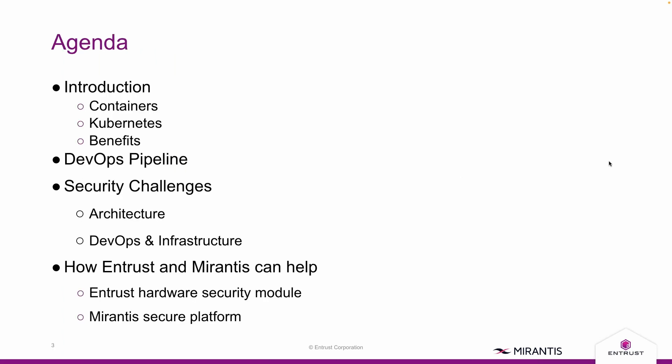For today's session, we'll start with a brief introduction to containers and Kubernetes, focusing on the benefits for DevOps. From there, we'll go deeper into the container deployment pipeline and describe the main security challenges faced by customers, including architectural challenges such as cryptographic key generation and management and the use of third-party multi-cloud compute resources. We'll then look at DevOps challenges including digital signing of container images and Kubernetes secrets management, and highlight where high assurance security is required. Finally, we'll close with a focus on how Entrust and Mirantis can help customers enhance security and facilitate regulatory compliance.